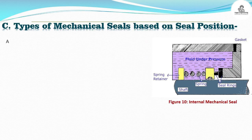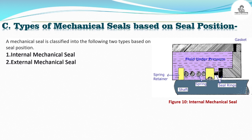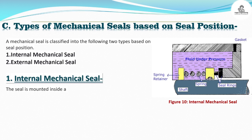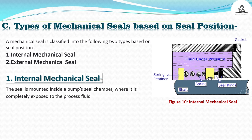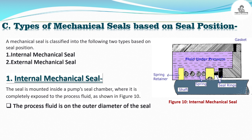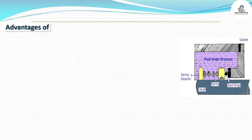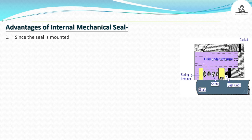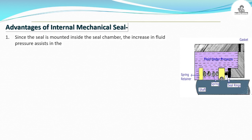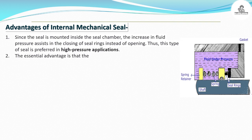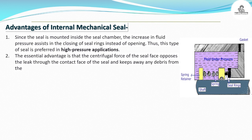Types of mechanical seals based on seal position: A mechanical seal is classified into two types based on seal position — internal mechanical seal and external mechanical seal. Internal mechanical seal: The seal is mounted inside a pump seal chamber, where it is completely exposed to the process fluid, as shown in Figure 10. The process fluid is on the outer diameter of the seal. Advantages: since the seal is mounted inside the seal chamber, an increase in fluid pressure assists in the closing of seal rings instead of opening — thus this type of seal is preferred in high-pressure applications. The centrifugal force of the seal face opposes the leak through the contact face and keeps away any debris from the mating faces. It is also easy to cool the seal since the process fluid surrounds the contact face.